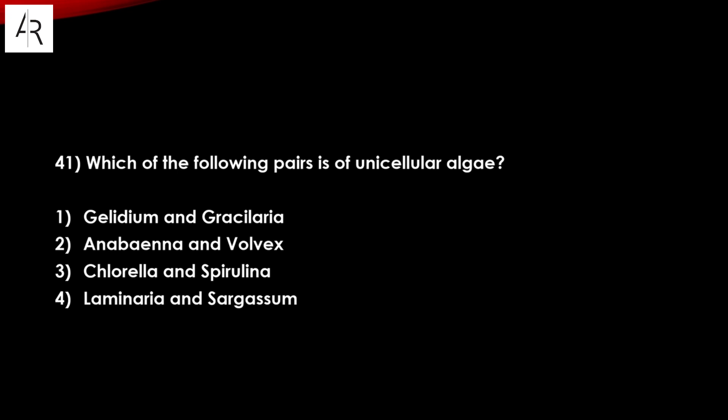Question number forty-one: which of the following pair is of unicellular algae? Gelidium and Gracilaria? No. Anabaena and Volvox? No. Chlorella and Spirulina — option number three is the answer.